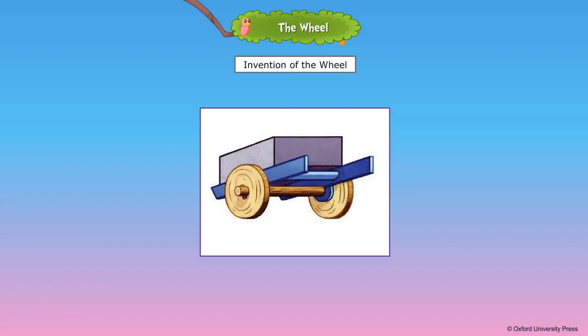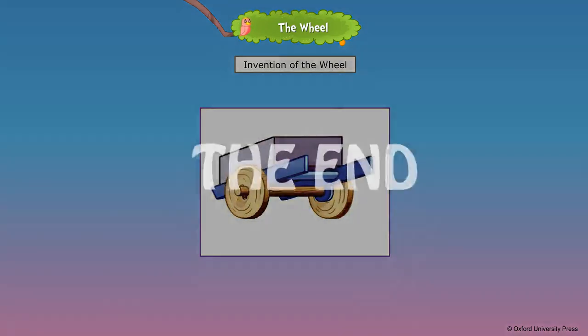Around the same time, when early human beings invented the wheel, they also discovered metals. Copper was the first metal to be discovered. Metals were used to make stronger and better wheels.